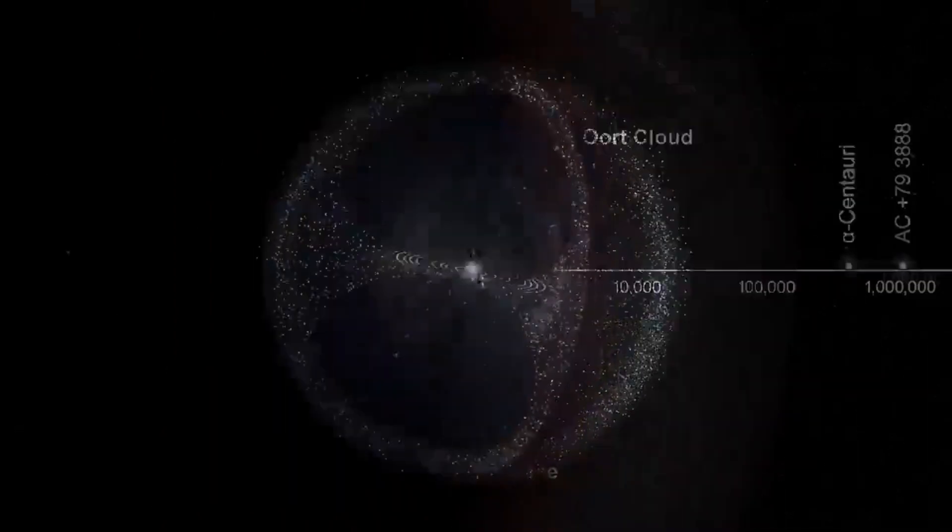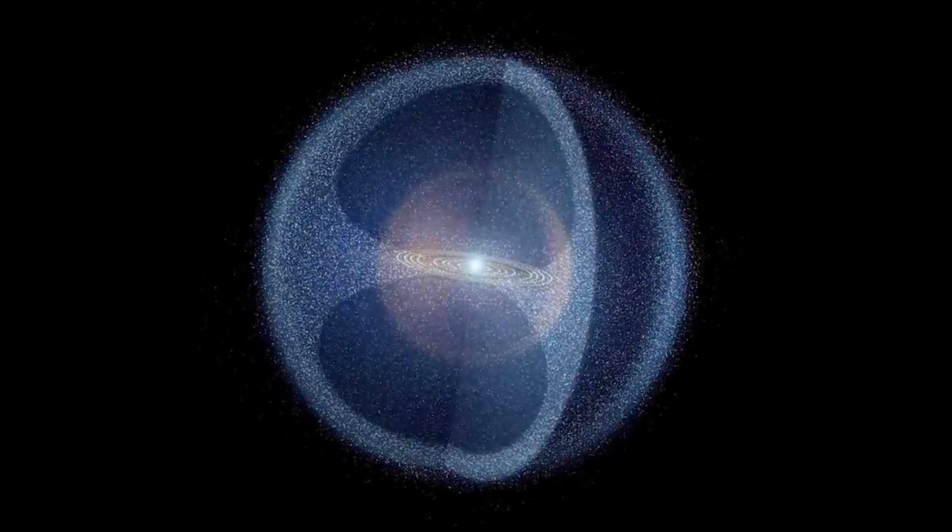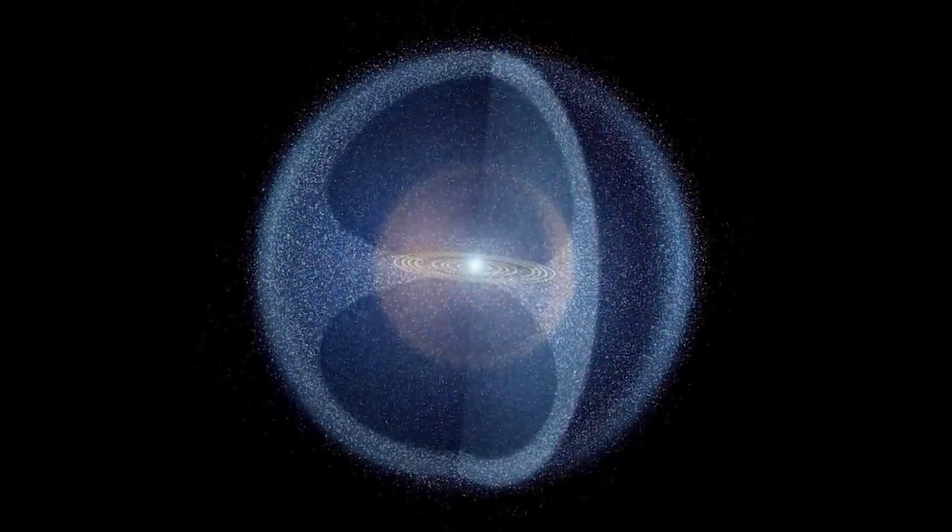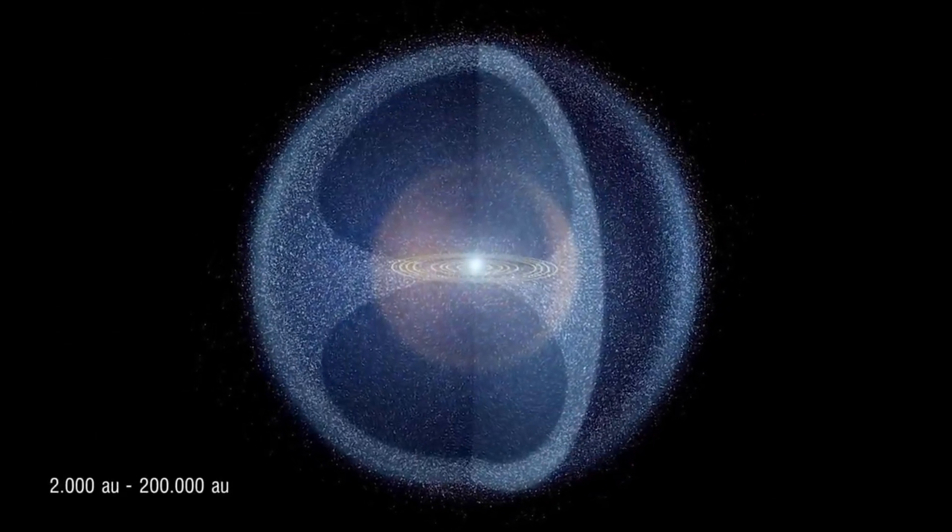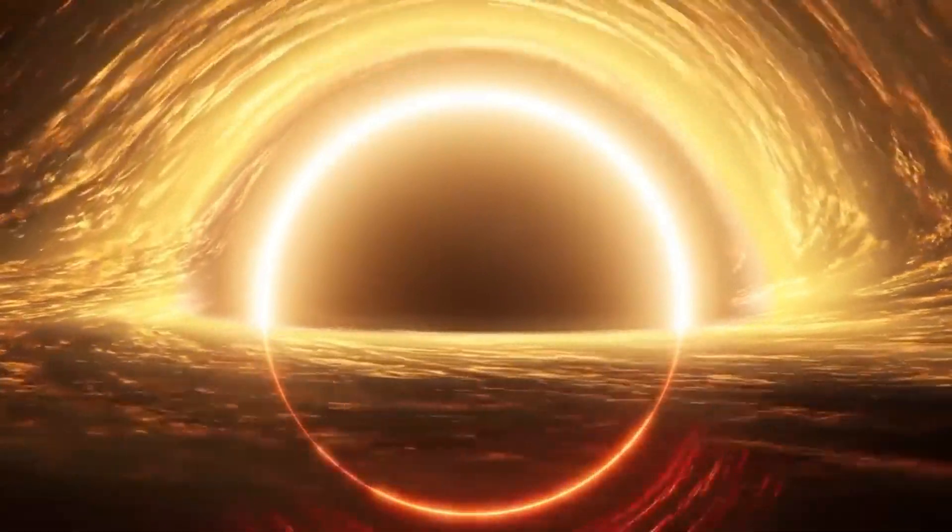Fortunately, the Oort cloud is a fairly elusive entity spanning from 2,000 to 200,000 astronomical units from the Sun. The truth is, the supermassive black hole in Phoenix A should not be that large.